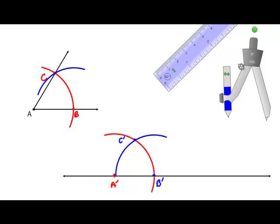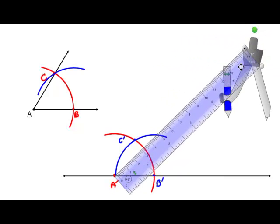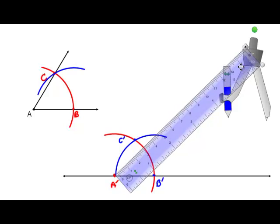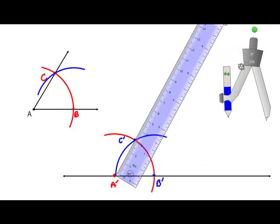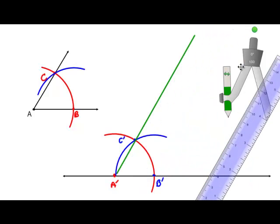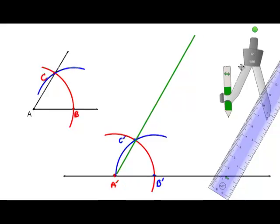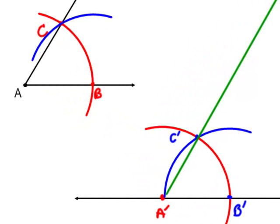Then all I have to do is take my straight edge and line it up with points A' and C'. Note that I'm not using the ruler markings on the straight edge. I will draw a line that intersects points A' and C', thereby creating two congruent angles.